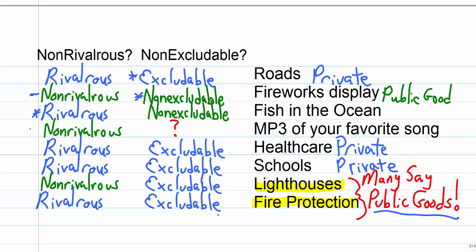An mp3 of a song I would say non-rivalrous because you and your friends could share the same mp3. You just make lots of copies. However when it comes to excludability I put a question mark here because the law says you're not supposed to copy that mp3 and music companies could exclude people with the law but it's practically hard to do.